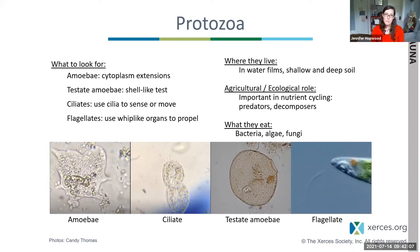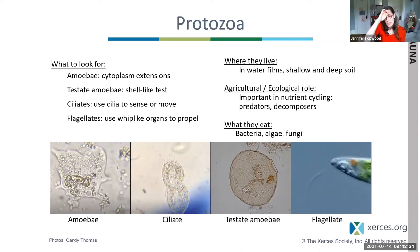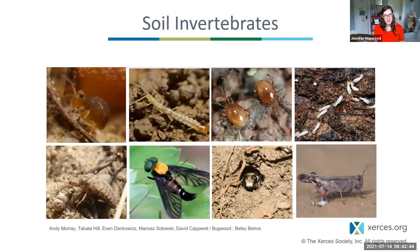Ciliate protozoans use cilia to move — hair-like finger projections that they whirl around. Flagella protozoans have one single hair-like organ they use like a whip to help propel themselves. Protozoans exist within the upper soil, but some can go as deep as 200 meters. They're very sensitive to changes in soil and soil health. That's the only non-animal group we're discussing today.